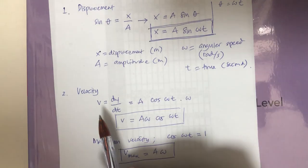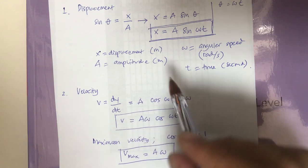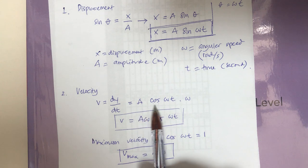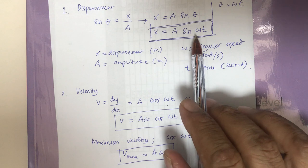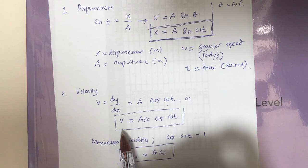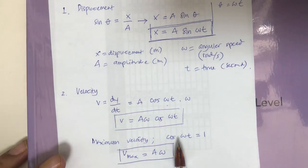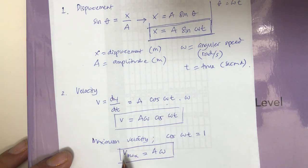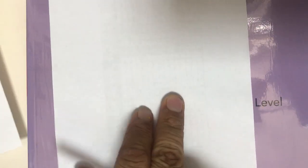To repeat: velocity is the differentiation of position x, or dx/dt. A is constant, differentiating sine gives cosine times ω, so v = Aω cos(ωt). The maximum value occurs when cos(ωt) equals 1, giving v_max = Aω.